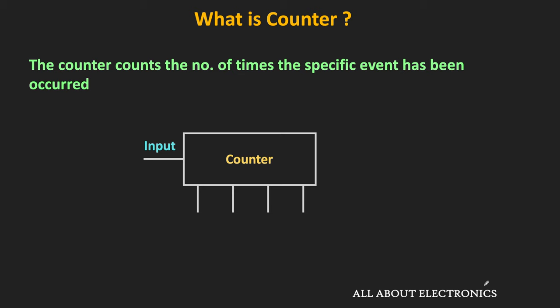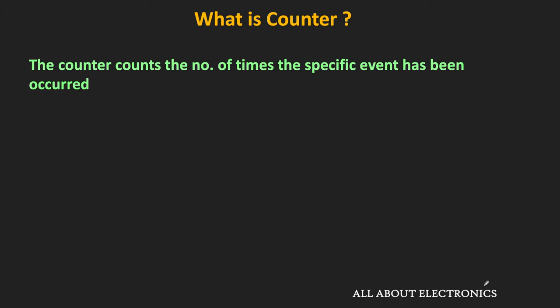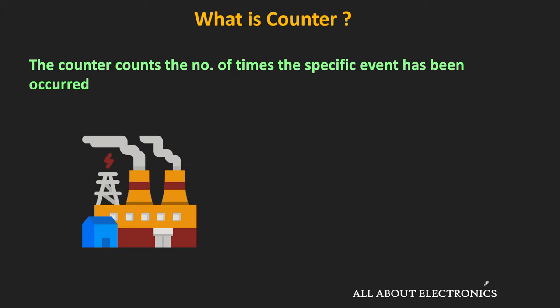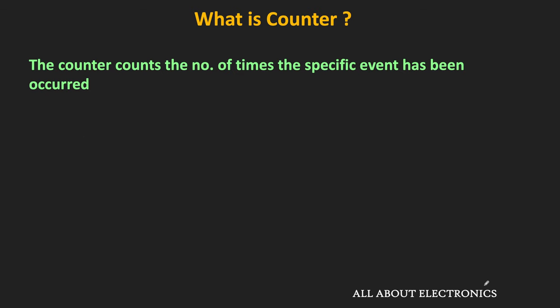The counter is a digital circuit which counts the number of times a specific event has occurred. For example, in some plant, if you want to measure how many times the temperature of a sensor goes beyond 50 degrees Celsius, then with the help of the counter, we can measure that. Since the counter is a digital circuit, the event which we want to count needs to be applied in the form of digital input.